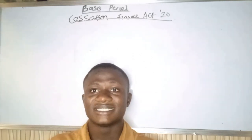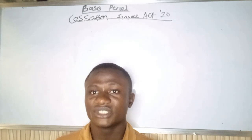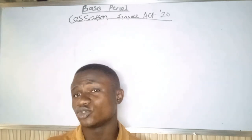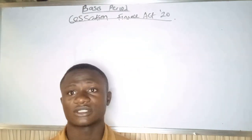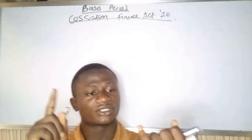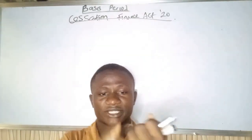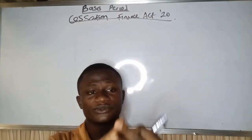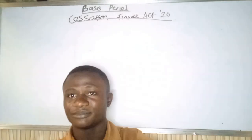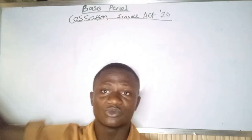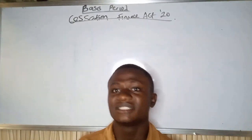So the date or the year for the cessation is still 2020. But imagine a business ceases in August 2020 — August, September, October, November, December, January, February — so February 2021 will be the year that they will remit the tax.